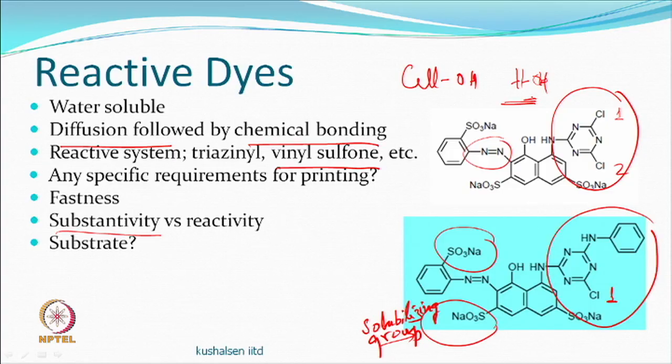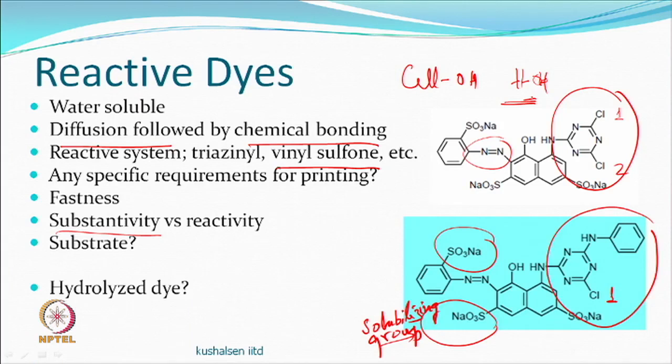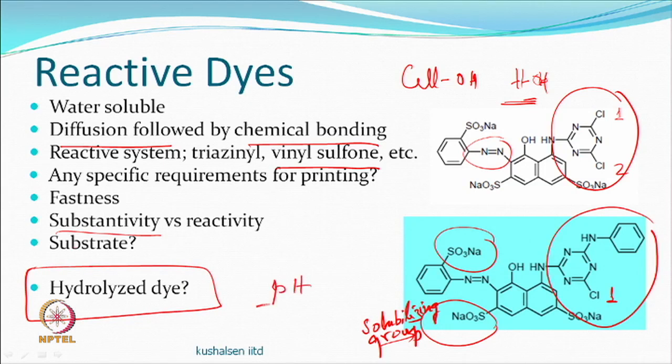For protein fibres, the different pH — neutral to slightly acidic — is a much better option and the reaction takes place. Any dye which has not reacted is also not hydrolyzed, which is the biggest advantage.